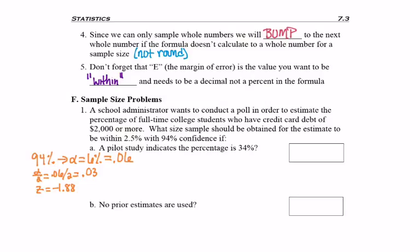So p hat is 0.34. That was given to us. A pilot study said the percentage, which is for us p hat because it's a pilot study, not the whole population, is 34%. Q hat is to take 1 minus that and get 66% or 0.66. The question wants us to be within 2.5%, where within is our magic word to mean the margin of error. But since we write it as a decimal, e equals 0.025.